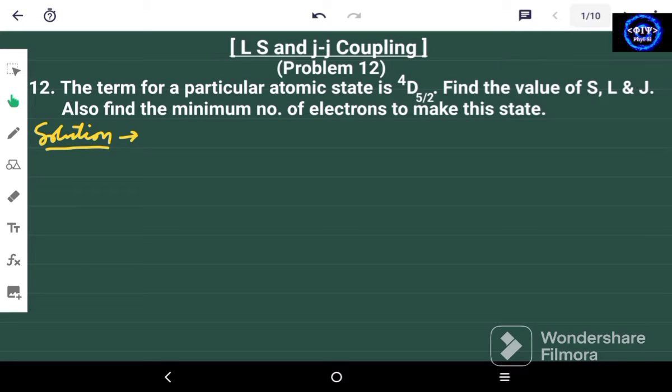Hello friends and welcome again to my channel PhiSci. This is problem number 12 on LS and JJ Coupling. In this problem the term for a particular atomic state is given, that is 4D5/2.